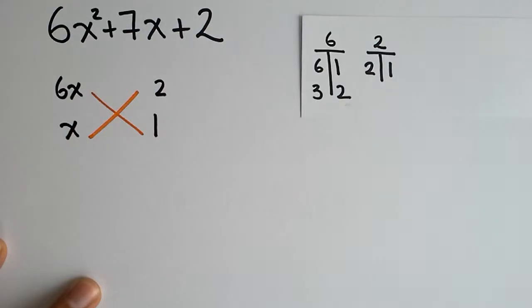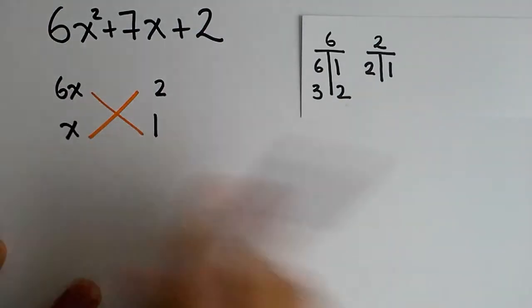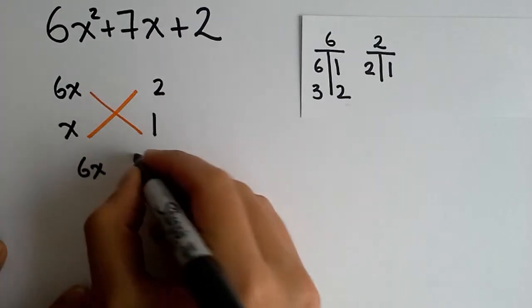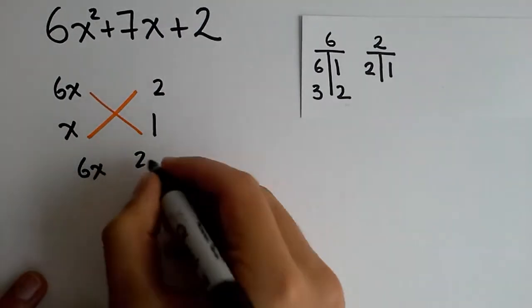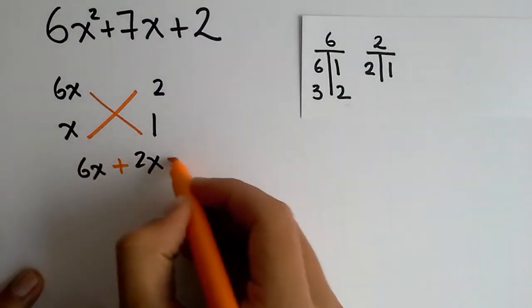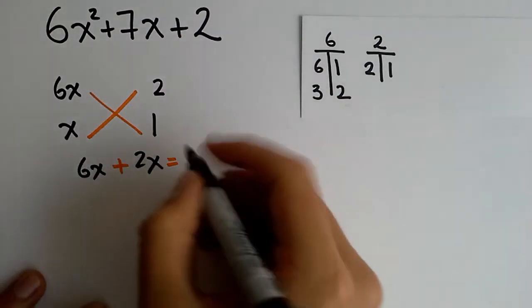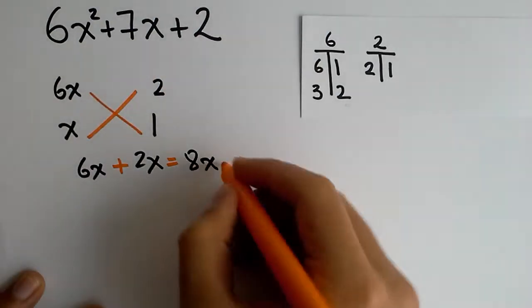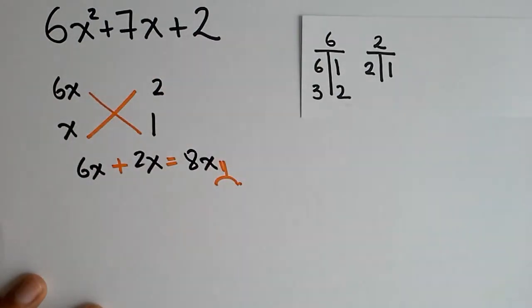You do your cross and you begin multiplying. 6x times 1 is 6x. 2 times x is 2x. And when you add these two terms, you obtain 8x. So, notice that 8x is not the term you're looking for. So, this try didn't help us a lot.